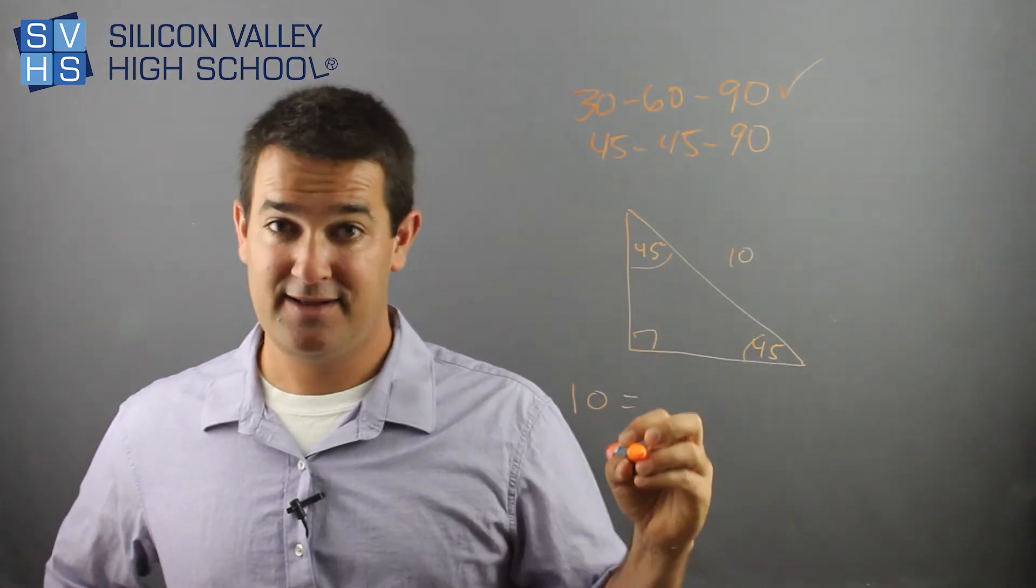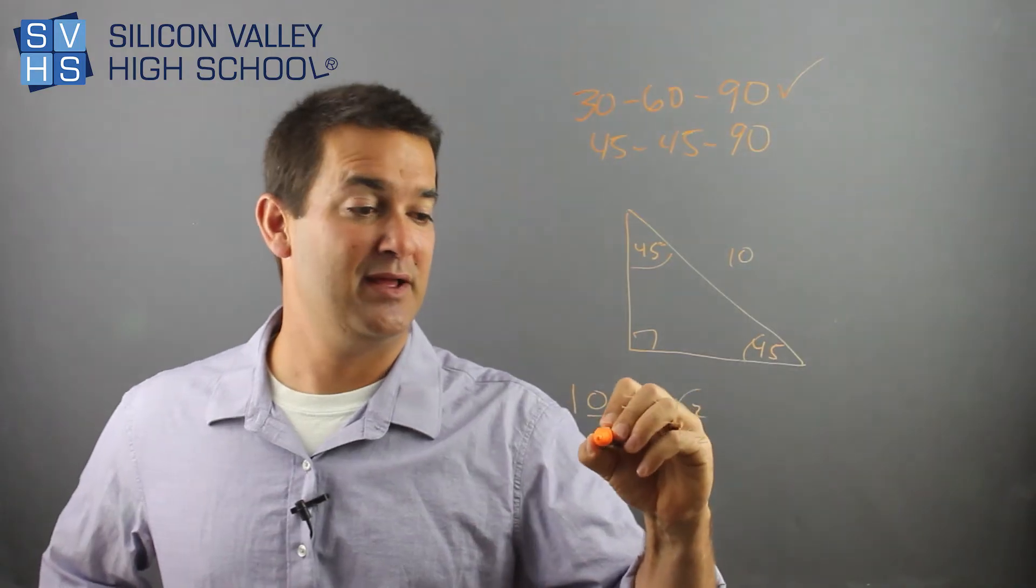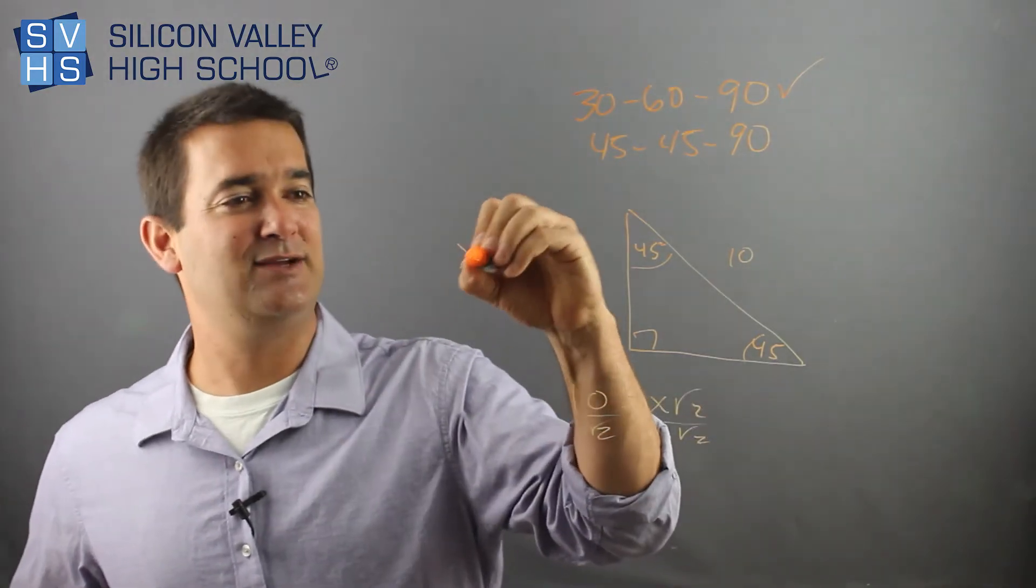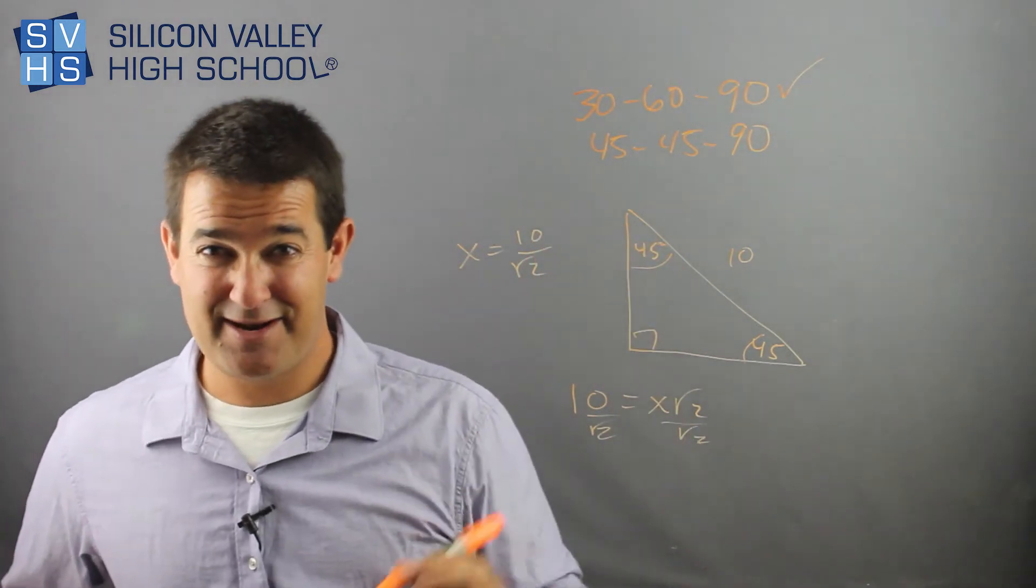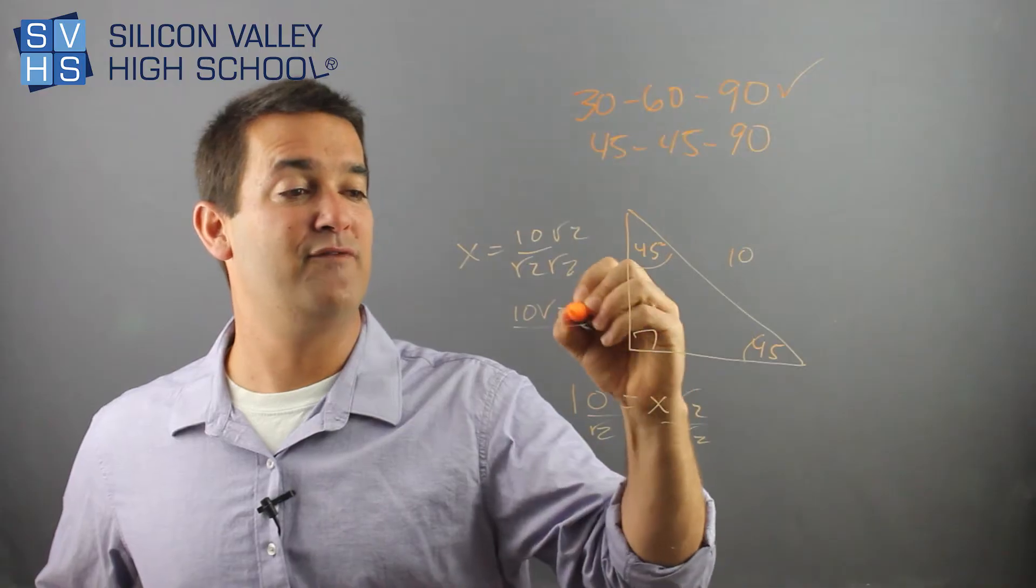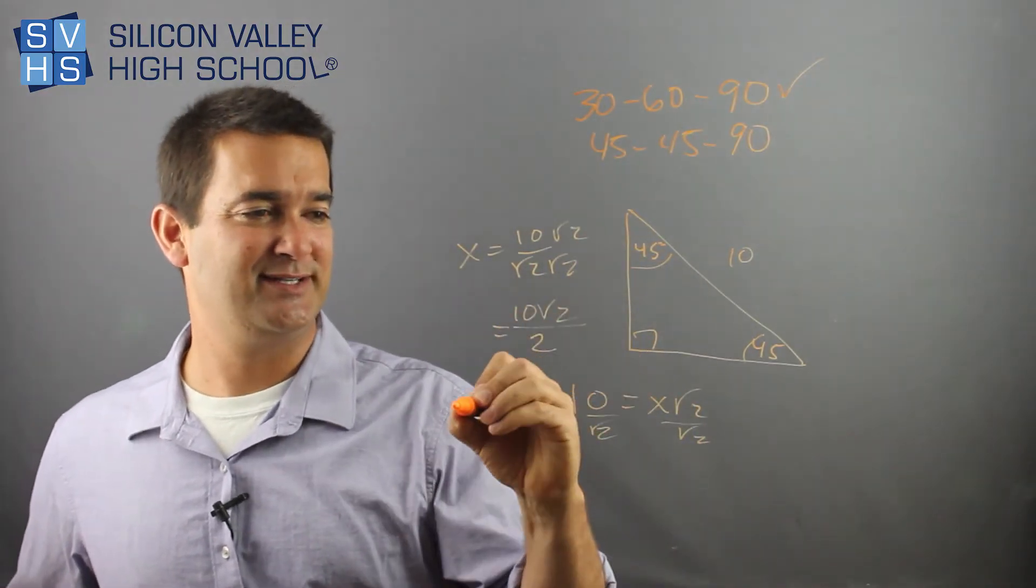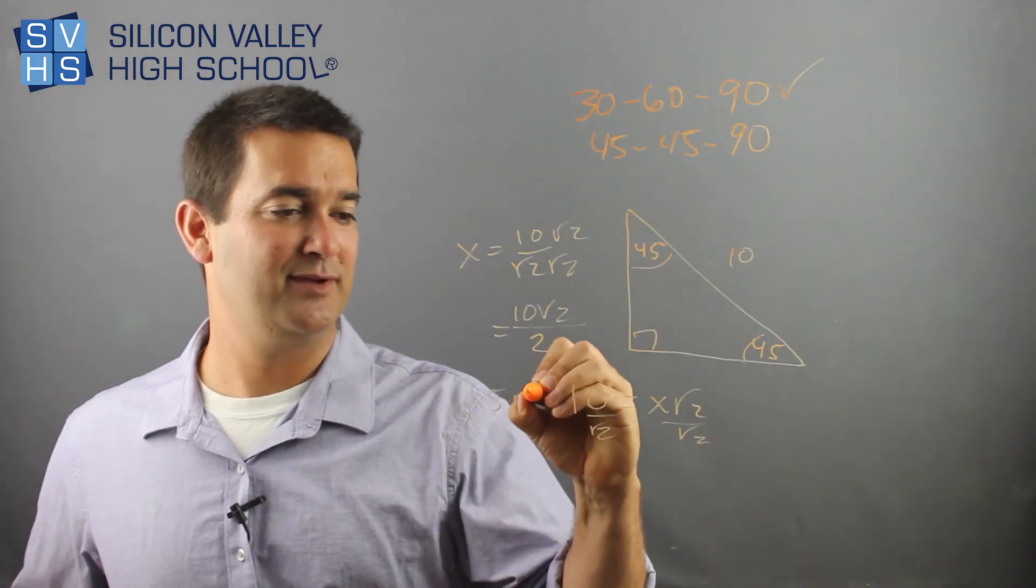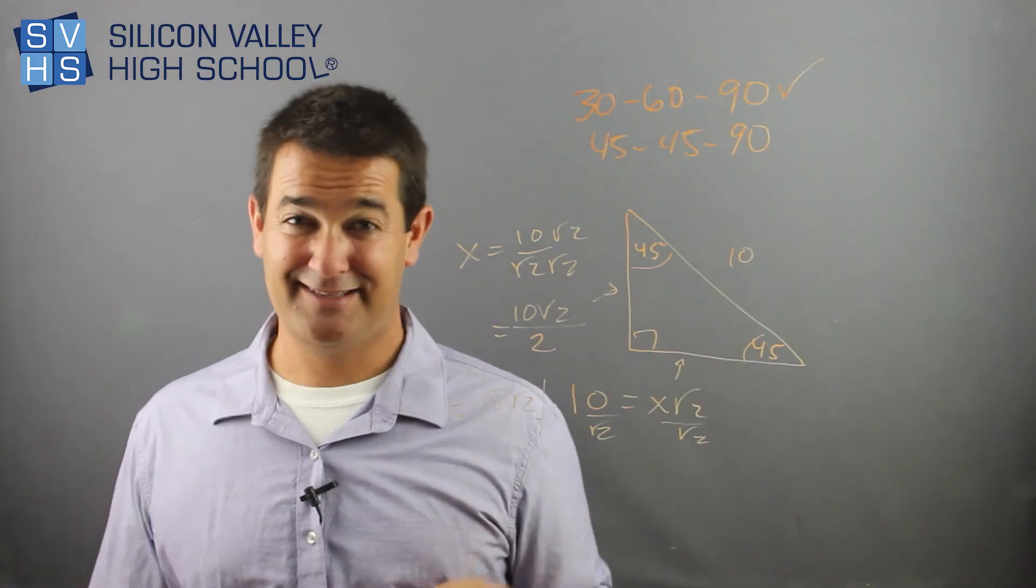If 10 is supposed to be x root 2, make it equal to x root 2. Divide both sides by root 2, and you're done. X equals 10 over root 2. Rationalize the denominator: root 2, root 2. You have 10 root 2 over 2. One more thing that actually reduces, so that would be 5 root 2. Those are your two sides here and here. And that's it.